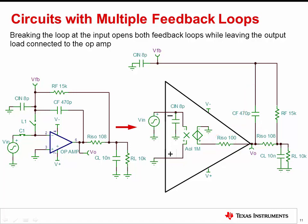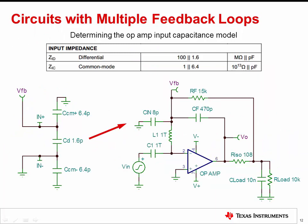However, by breaking the loop at the input, the inherent input capacitance of the amplifier no longer interacts with the feedback network. Therefore, it is required to place a representation of the amplifier input capacitance CN on the other side of the inductor to match the amplifier input capacitance. The differential and common mode input capacitances are typically specified in op-amp datasheets, and this information can be used to develop a simple model of the input capacitance of the amplifier as shown.